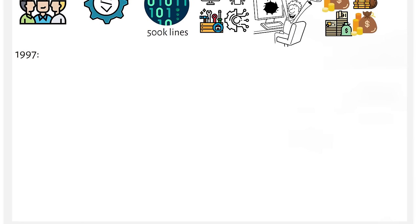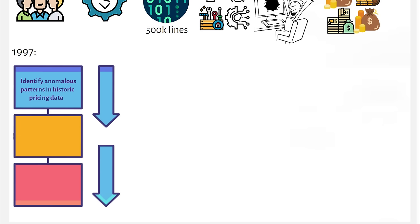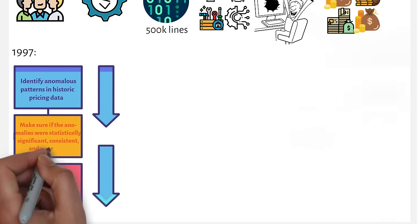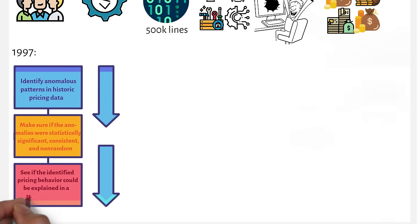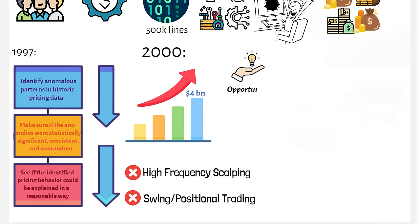By 1997, Medallion had a three-step process to discover trading signals. Firstly, identify anomalous patterns in historic pricing data. Secondly, make sure the anomalies were statistically significant, consistent over time and non-random. And thirdly, see if the identified pricing behaviour could be explained in a reasonable way. By the year 2000, the fund managed to grow to $4 billion. Medallion stock trades were not high-frequency scalping trades and were neither typical swing or positional trades. The idea was to focus on opportunities that occurred frequently and lasted for a period ranging from minutes to a few days.